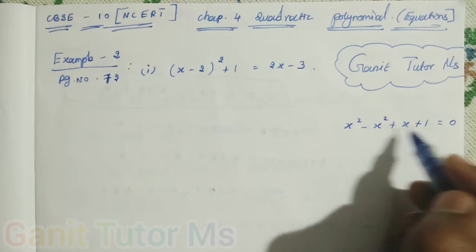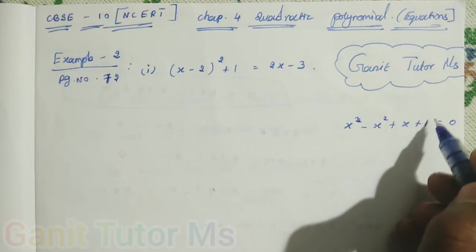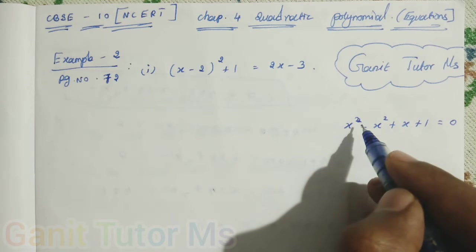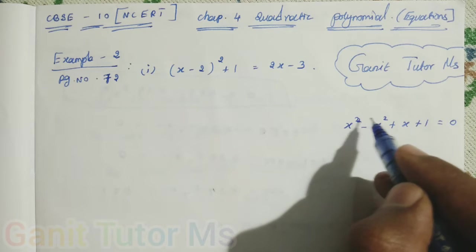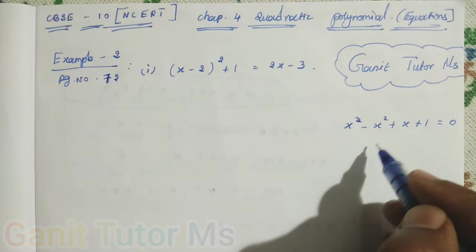Because the degree, the highest order is 2 here, right? So, here 2, here 2, here 1, here 0. So, the highest power is 2. That is, the order is 2, so degree 2. So, it is quadratic equation only, no?